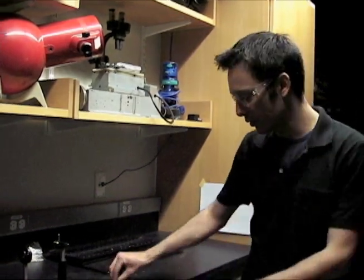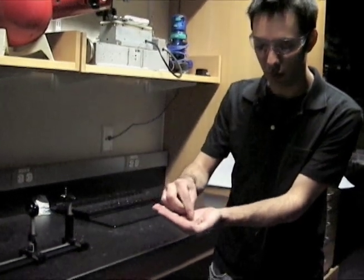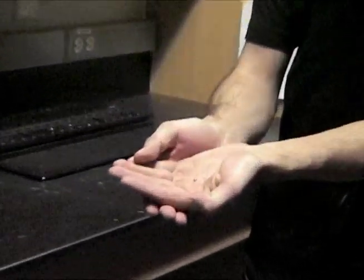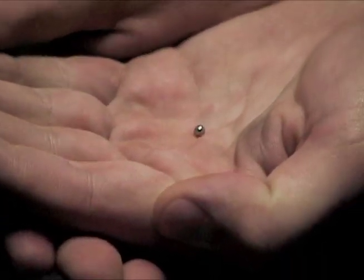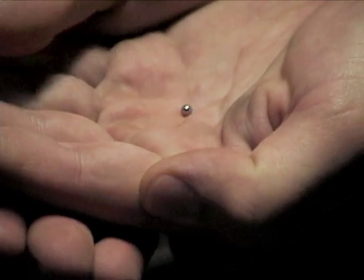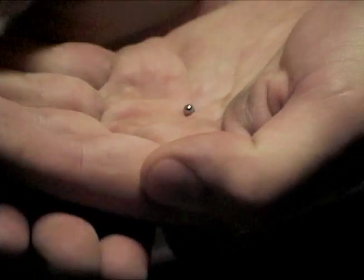For our spherical object, we're using this one-eighth of an inch chrome ball bearing. With modern manufacturing techniques, we can get this very close to perfectly spherical. Whereas in the original experiment, they had to mold a metal disc from scratch. But now we can do considerably better.